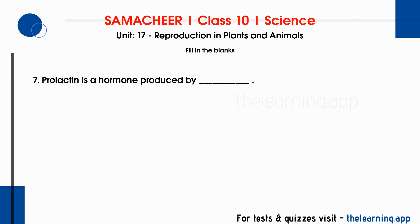Seventh question: prolactin is a hormone produced by DASH. The correct answer is anterior pituitary. Prolactin hormone is very helpful for milk production after delivery.